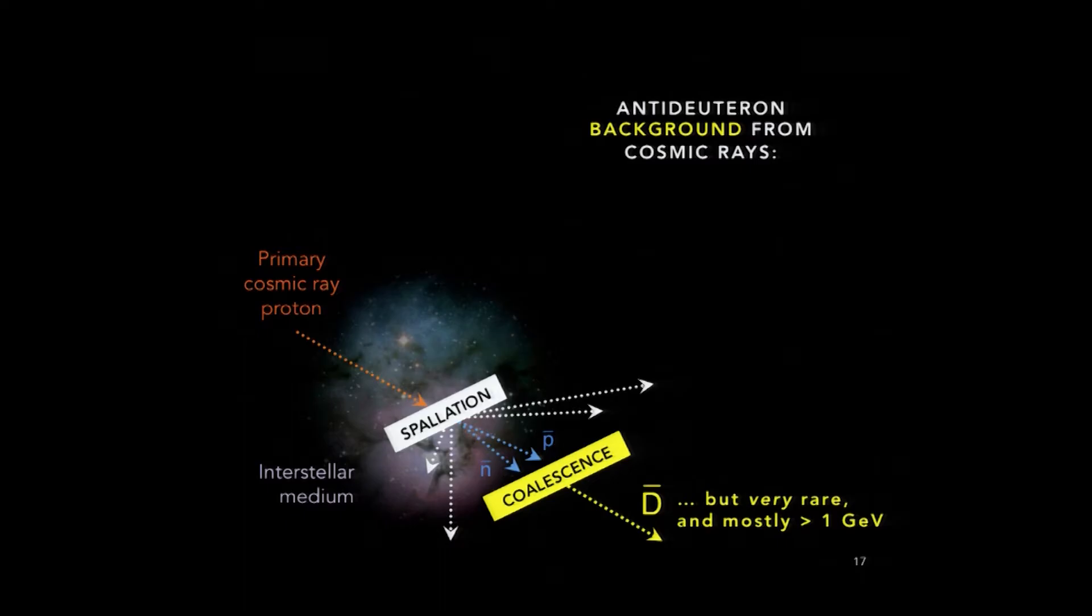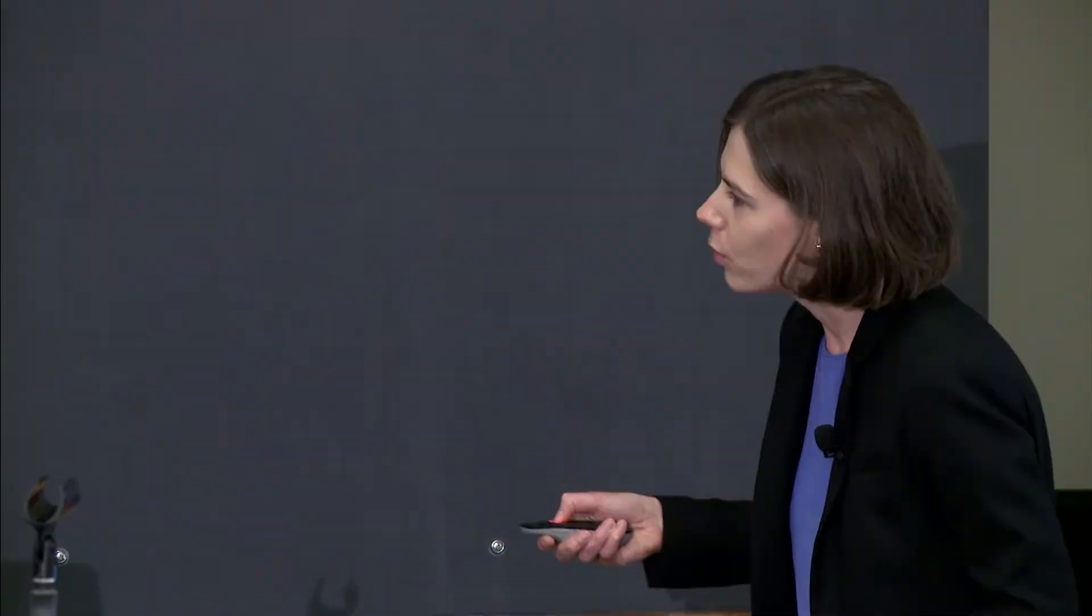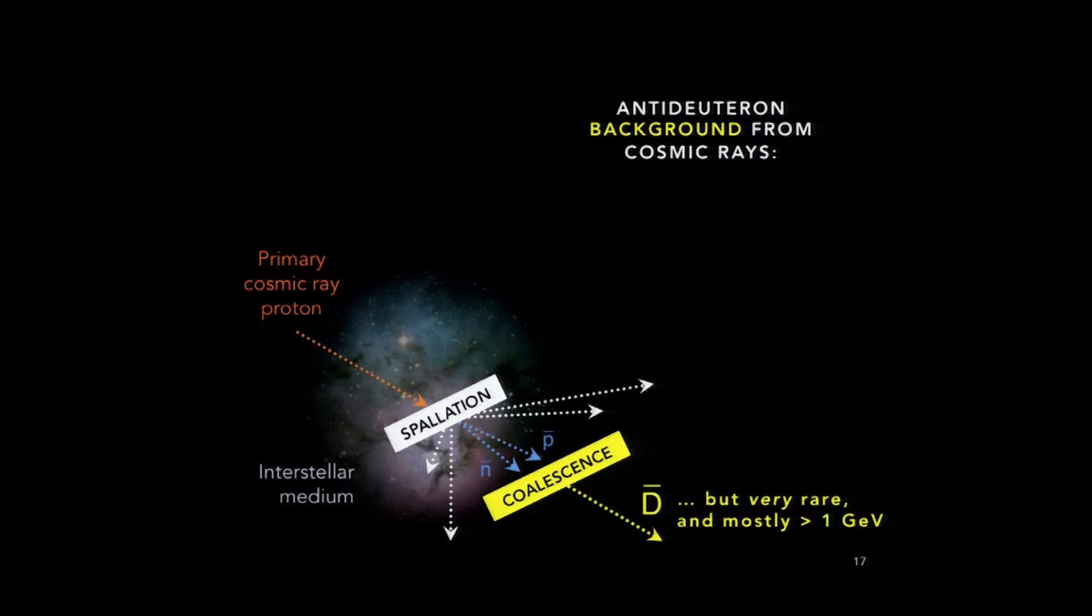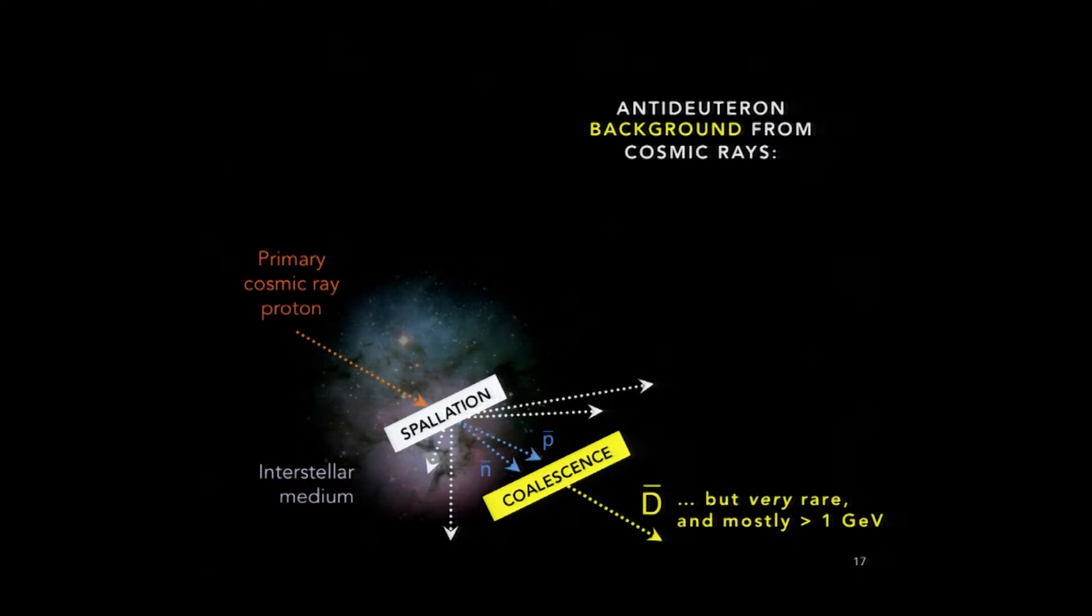And then on top of that, it turns out that kinematically in this process, the anti-proton and anti-neutron that you might get tend to only coalesce if both of them have relatively high momentum. So if we're to look at these anti-deuteron once they make their way from where they're created to a detector near Earth, we can say two things about this background population. First of all, the absolute number of these particles that we would see would be very low. So I just show the anti-deuteron flux here in some appropriate units. It's extremely suppressed. The other thing that we see is that the spectrum is peaked well above one GeV in energy. Now keep that in mind because I want to show you the other way that we believe that anti-deuteron might be produced in our galaxy.